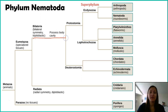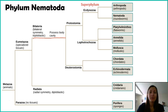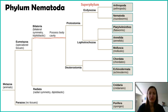All of our bilateral organisms are triploblastic — they have the endoderm, the ectoderm, and what we don't see in our diploblastic organisms, they also have a mesoderm. When we get into bilateral organisms, we have a second split going to protostomia and deuterostomia — the protostomes and the deuterostomes. We're going to go down the protostomes first.